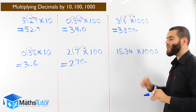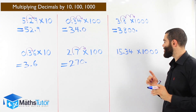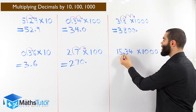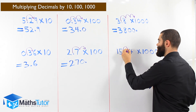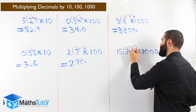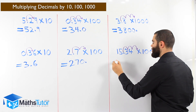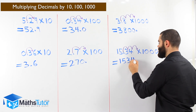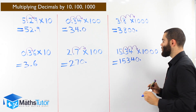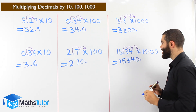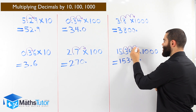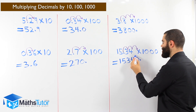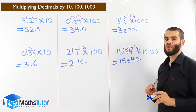Last one: 15.34 times a thousand. A thousand has three zeros — very easy. We grab our point and say, you don't belong over here, we're going to move you three times to the right. One jump, two jumps, three jumps. It becomes fifteen — we move over the three, over the four, and over nothing which means zero. We put our point. The answer is fifteen thousand three hundred and forty.